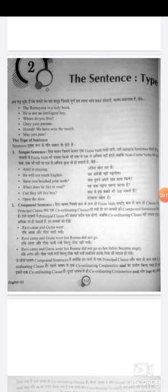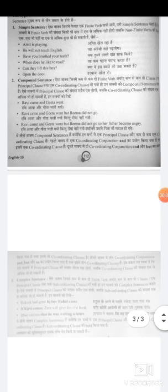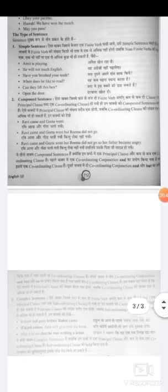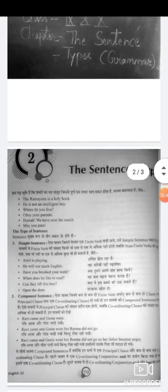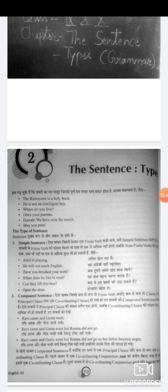For example: The Ramayana is a holy book. He is not an intelligent boy. Where do you live? Obey your parents. We won the match. Next, the types of sentences. These are three: simple, compound, and complex.